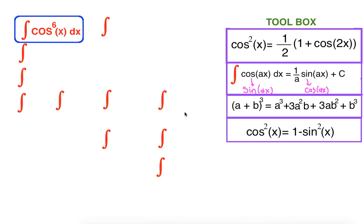Hi everyone! In this video, we're going to integrate cosine sixth of x. It will be very useful to know the half angle identity for cosine squared of x, integration of cosine or sine with an ax kind of argument, sum of two cubes, and the Pythagorean identity for cosine.